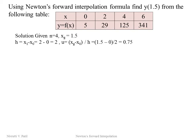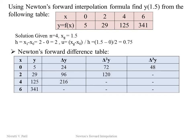Now we prepare the forward difference table. The x and y values are written as given. The first-order differences are: 24 (from 29 − 5), 96 (from 125 − 29), and 216 (from 341 − 125). The second-order differences are: 72 (from 96 − 24) and 120 (from 216 − 96). The third-order difference is 48 (from 120 − 72).